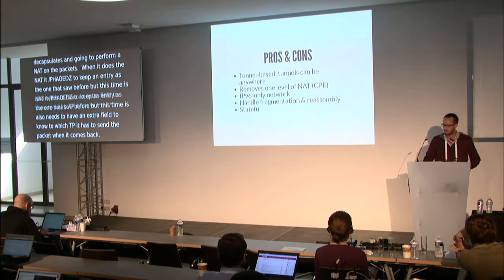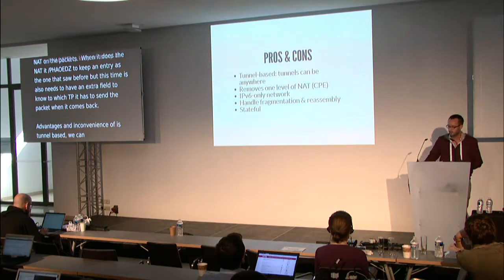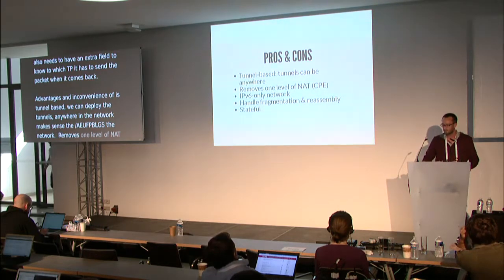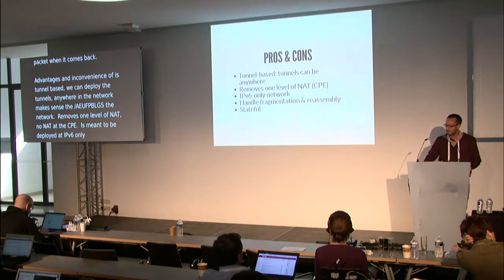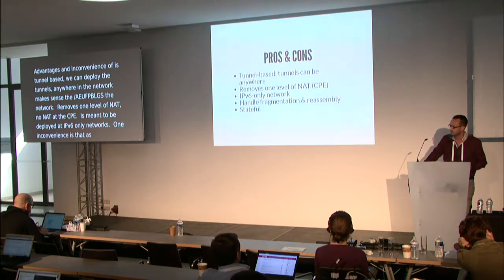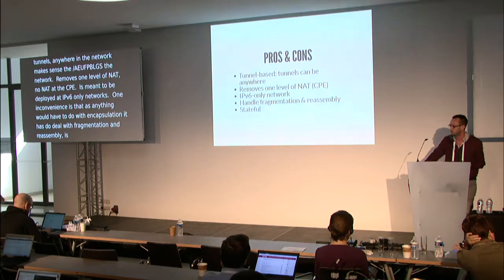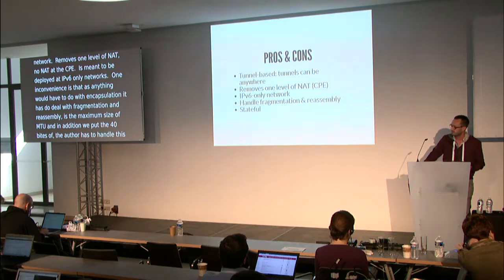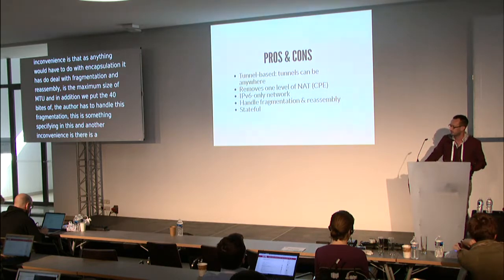Advantages and inconveniences of dual stack lite: it is tunnel-based and the tunnels can be deployed anywhere in the network, ideally at the edges. It removes one level of NAT — there is no NAT at the CPE. It's meant for IPv6-only networks. One inconvenience is that, like anything involving encapsulation, it has to deal with fragmentation and reassembly: if an IPv4 packet is at the maximum MTU and we add 40 bytes of IPv6 header, the AFTR must handle fragmentation and reassembly. Another inconvenience is that it is stateful because it uses a carrier-grade NAT.